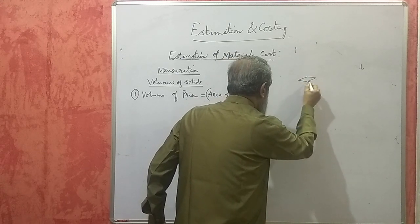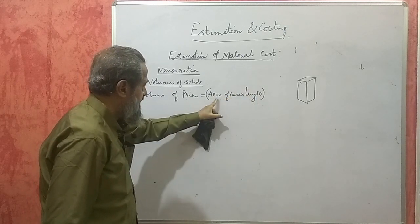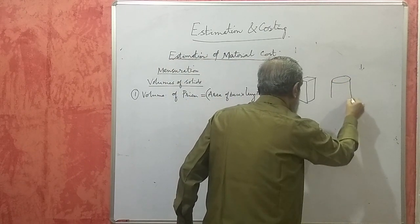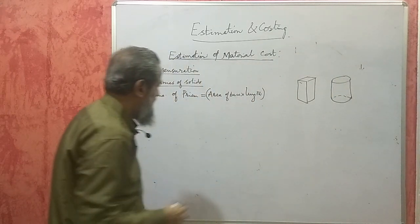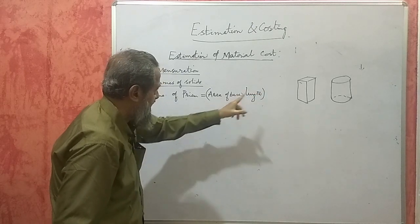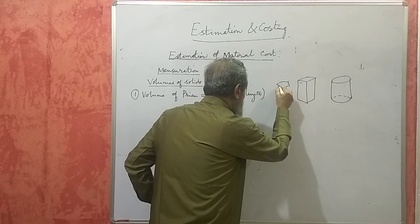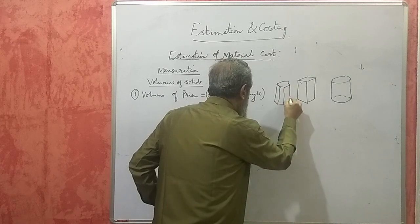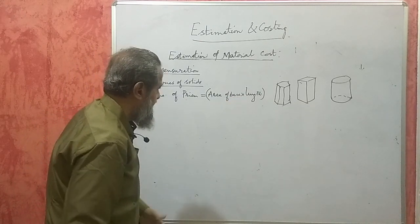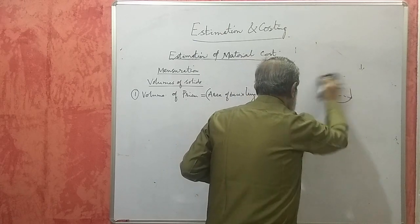The prism may be a square prism — for area of base, use the formula for area of a square. It may be a circular prism, which is also called a cylinder — a cylinder is nothing but a circular prism, so again it is area of base (using the circle formula) into length. It may be a hexagonal prism — use the hexagon formula for area of base. It may be an elliptical prism — use the ellipse formula. It depends upon the shape of that particular part.